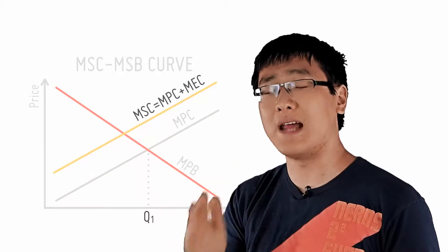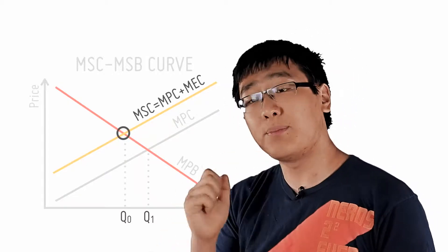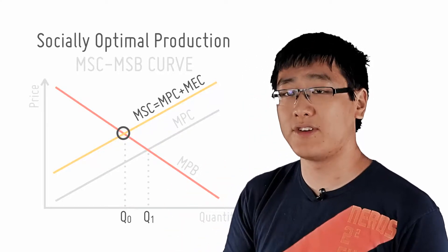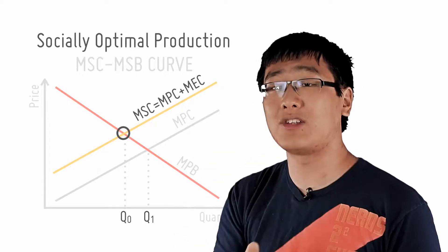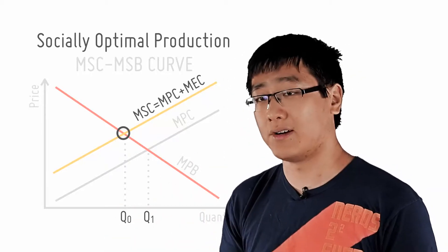However, what should the production be? Now, that was what the production was, but what should it be? The production should occur at MSB equals MSC, where it is allocatively efficient for the entire society, where society values the last unit of good as much as it costs to produce it—cost being the entire cost to society, not just private cost.